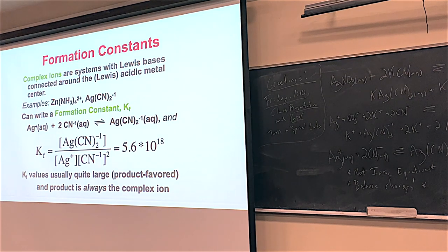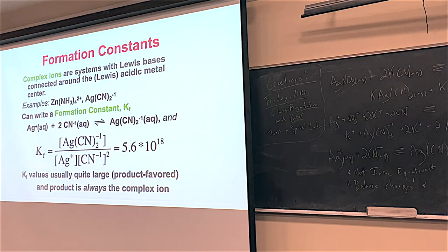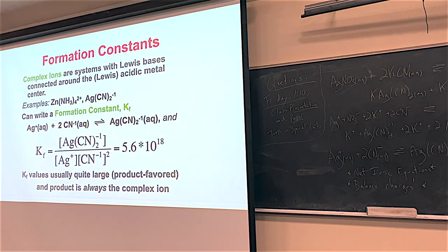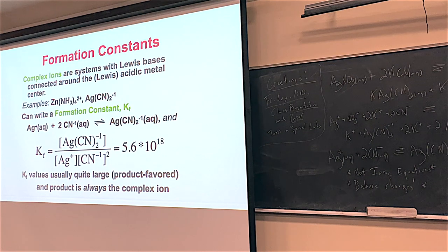The equilibrium constant comes from this form of the equation: the complex ion is the product, and the reactants are whatever you need to make that complex ion. This is kind of the opposite of KSPs — in KSPs, the solid was the reactant and whatever made the solid were the products. But with KFs, it's the opposite. Here's an example of a formation constant expression for making the AgCN2⁻¹ species, and the magnitudes are just super, super big. That shows the complex ion really wants to form — if you put silver and cyanide together, it forms right away.